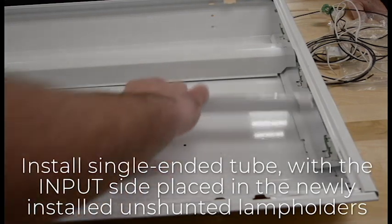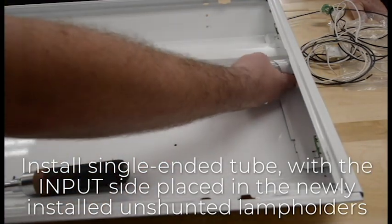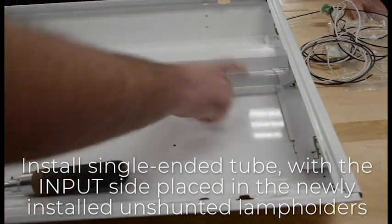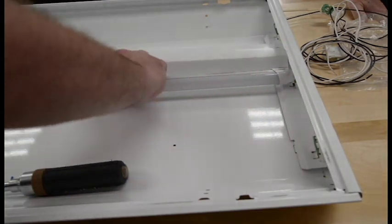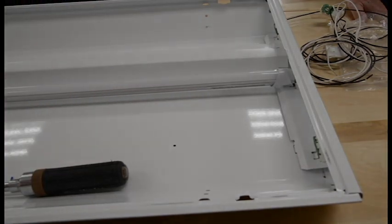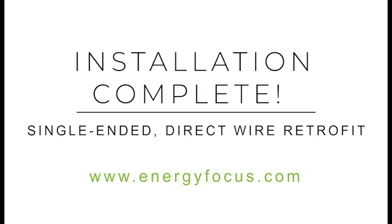Finally, install an Energy Focus single-ended direct wire tube with the input side of the tube being inserted into the newly installed unshunted lamp holders. Turn on the main power source. Your Energy Focus retrofit is now complete.